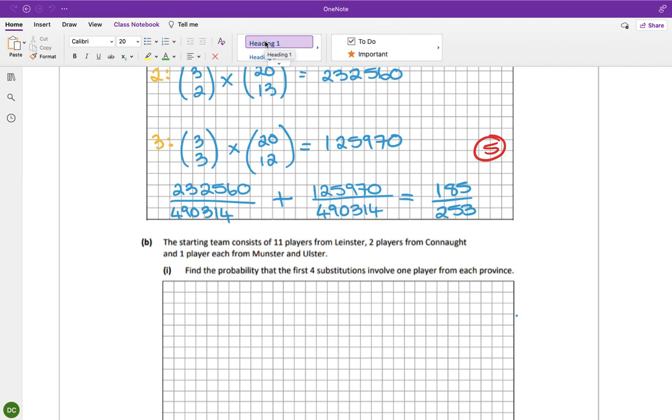We'll keep going. So the starting team consists of 11 players from Leinster, two players from Connacht. So this is the same, isn't it? So what was it? 12 Leinster players, three Connacht players, five Munster and three Ulster.